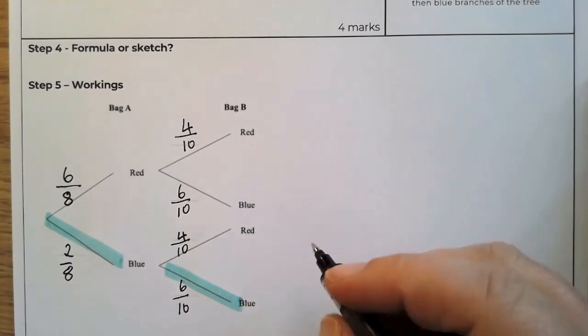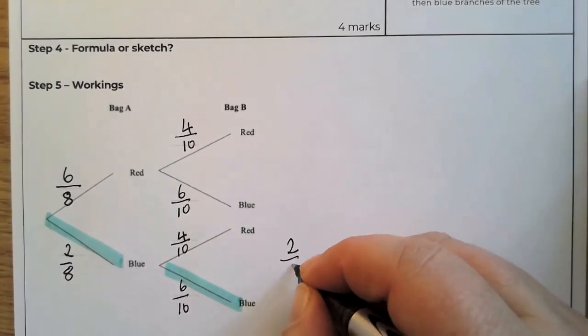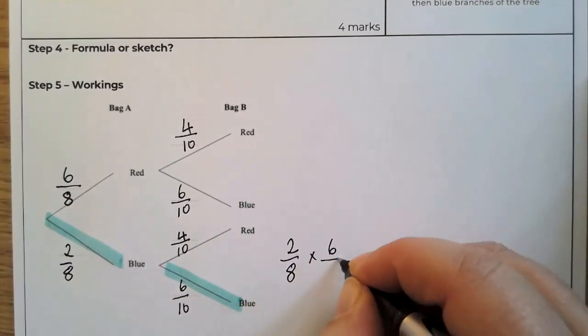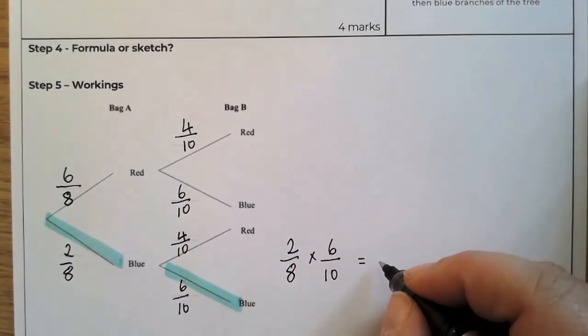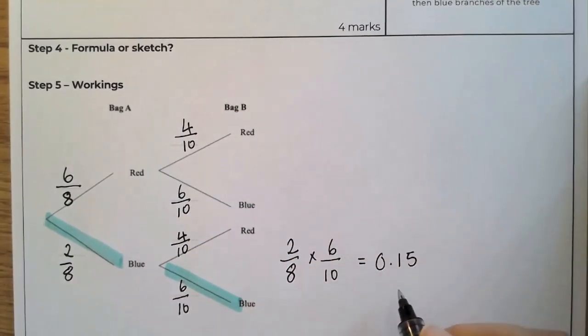And what we're going to do across here is we're going to multiply them. Put that into your calculator. Probability can be a percentage, a fraction or a decimal. I'm just going to leave it as the decimal.